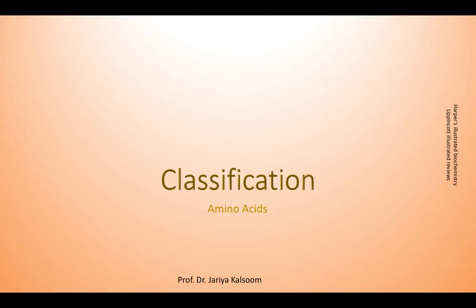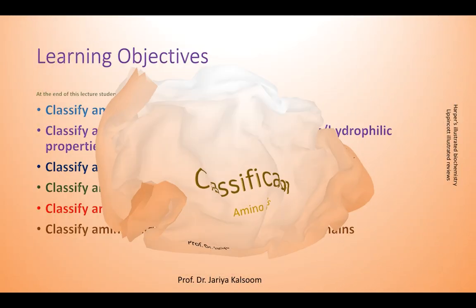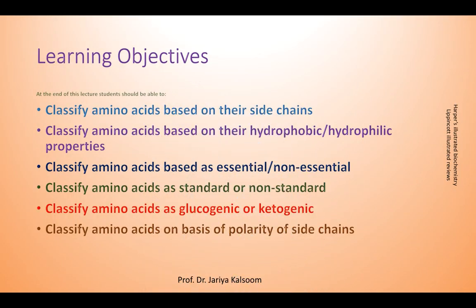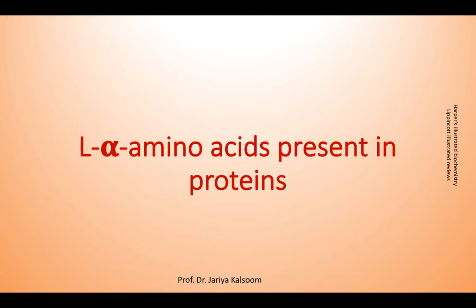Although more than 300 amino acids occur in nature, only a set of 20 L-alpha amino acids encoded by nucleotide triplets called codons participate in protein synthesis. Each amino acid has a carboxyl group and a primary amino group, except for proline which has a secondary amino group, and a distinct R chain bound to the alpha carbon. Amino acids are classified on the basis of the properties of their side chains.